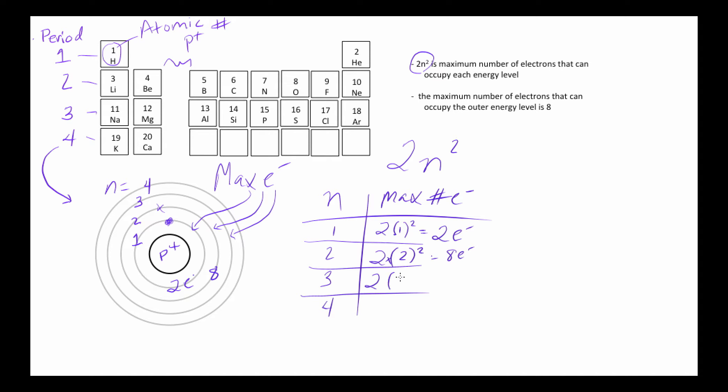Third level squared: 3 squared is 9 times 2 is 18 electrons. In the fourth energy level, and this is kind of overkill, 4 squared is 16 times 2 is 32. We are so not going that far, but that means there's a maximum of 32 electrons that can go in this energy level out here.